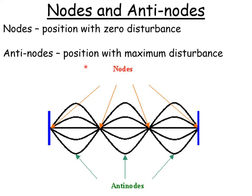And the anti-nodes are where you've got positions with maximum disturbance. So these bits are called anti-nodes and these bits are called nodes.